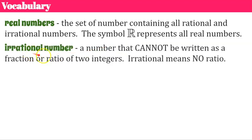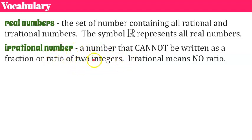An irrational number is a number that cannot be written as a fraction, or expressed as a ratio of two integers. Remember, a fraction is a ratio of numerator to denominator. The word 'irrational' literally means 'no ratio' — 'ratio' is inside the word 'rational,' and 'irrational' means no ratio. Basically, you cannot write the value as a fraction.